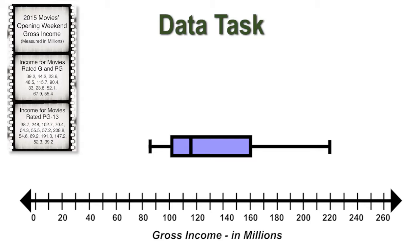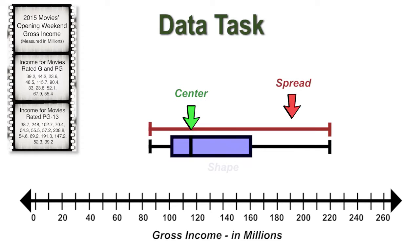There are three different ways to look at the distribution of the data in order to determine the answer: the center, spread, and shape.